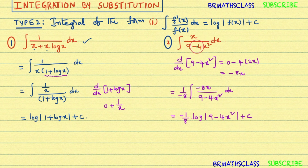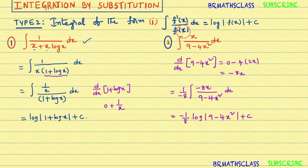If you want to do this problem by substitution method, take 9 − 4x² = t and proceed. But it is not necessary. If the given integral is of the form ∫f'(x)/f(x) dx, we can write its answer directly. Just a little bit of practice is required for such types of problems, and then you can write the answer directly.